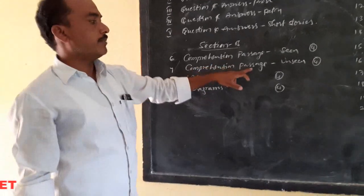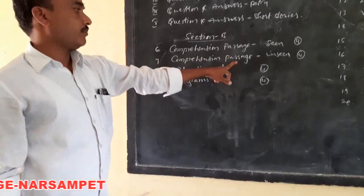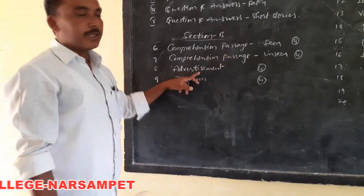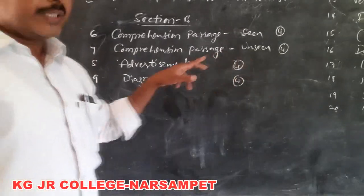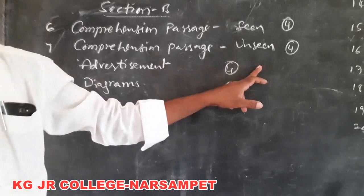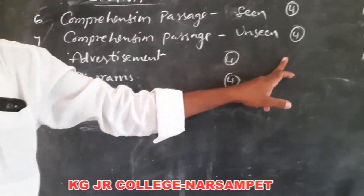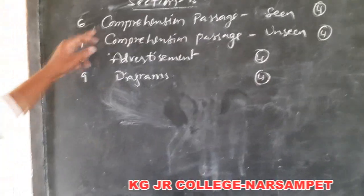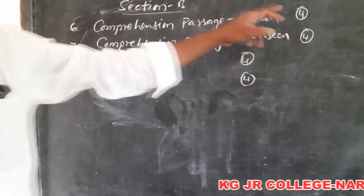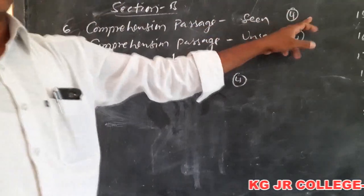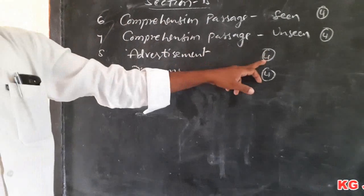Next is the advertisement section — six questions are given and you have to attempt all six. The advertisement carries four marks, and similarly the seen passage and unseen passage also each carry four marks.